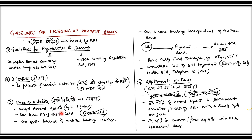तीसरी guideline है scope of activities — payment banks क्या-क्या कर सकते हैं। Payment banks demand deposits accept कर सकते हैं लेकिन maximum 1 lakh तक। ATM and debit card issue कर सकते हैं लेकिन credit card issue नहीं कर सकते। Internet banking और mobile banking की services provide कर सकते हैं। Payment bank, banking correspondent भी बन सकता है of another bank — जैसे कि अगर SBI किसी rural area में present नहीं है तो वो payment bank को अपना agent बना सकता है।